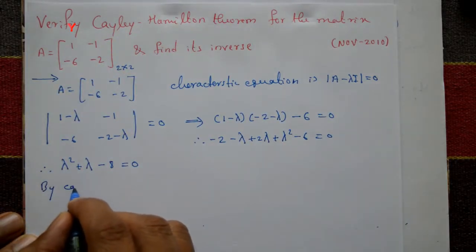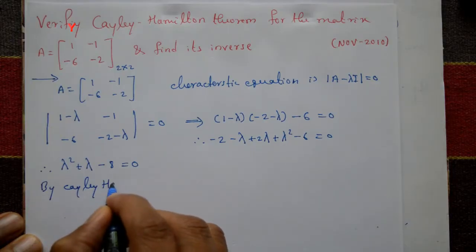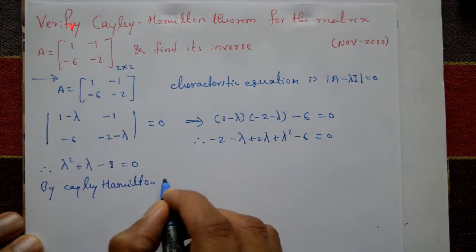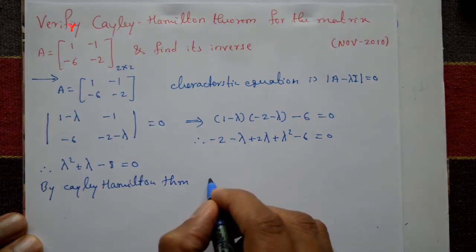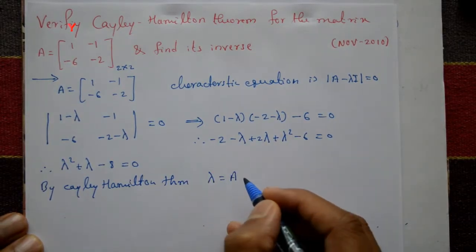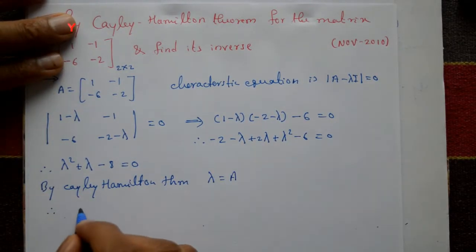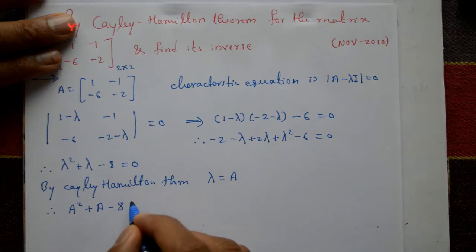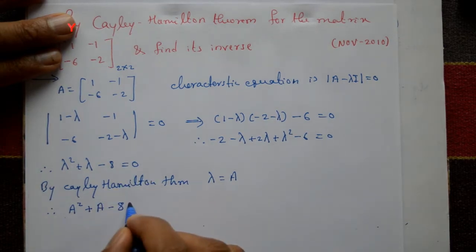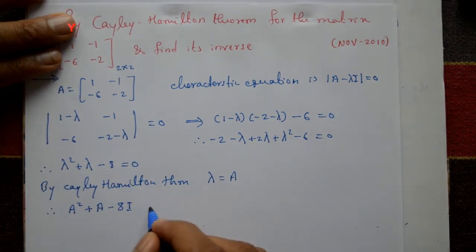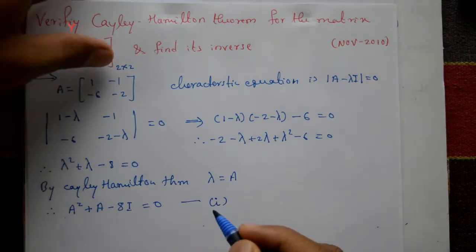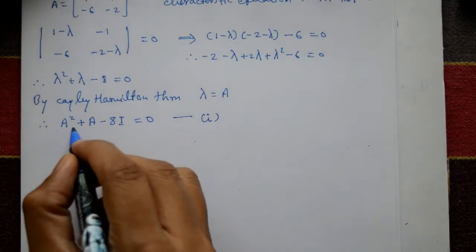To verify the Cayley-Hamilton theorem, we substitute λ = A into the characteristic equation. By the theorem, A² + A - 8I = 0. Call this equation number 1. Now we need to compute A².